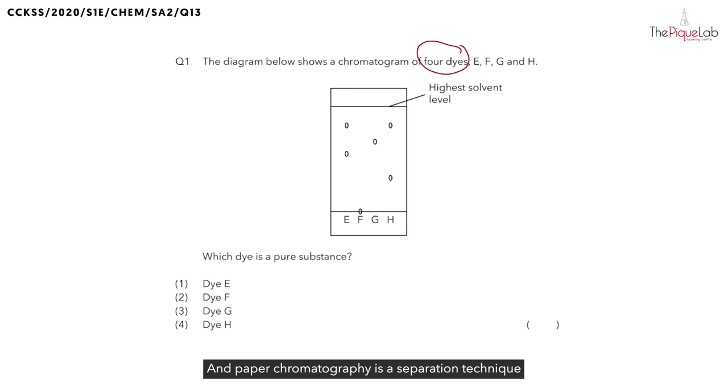Paper chromatography is a separation technique that is used to separate and identify small amounts of substances that are dissolved in a solvent. We can also use it to test the purity of a substance. Let me explain the results a little. What is this highest solvent level? If I were to compare it to a race, that's like my finishing line.